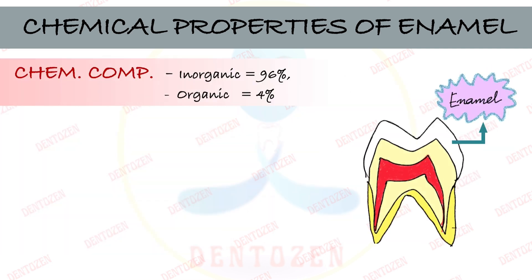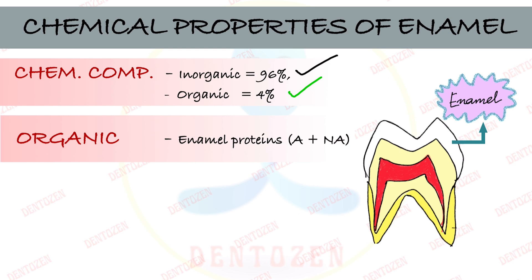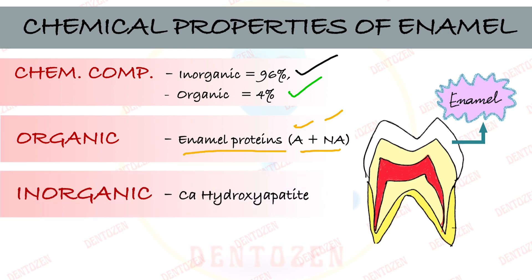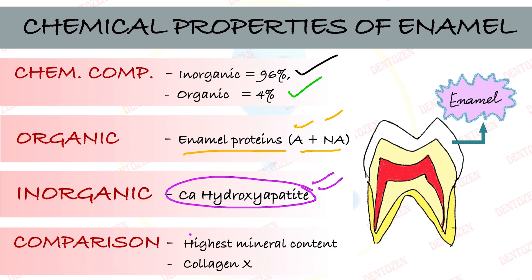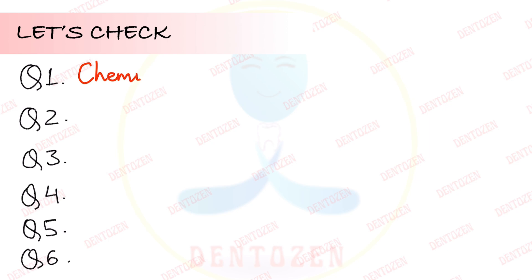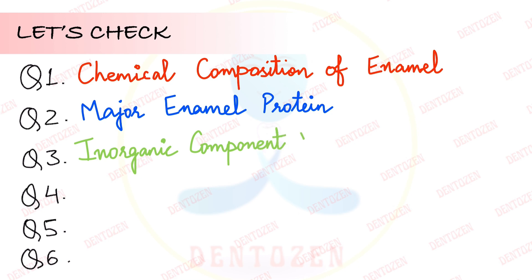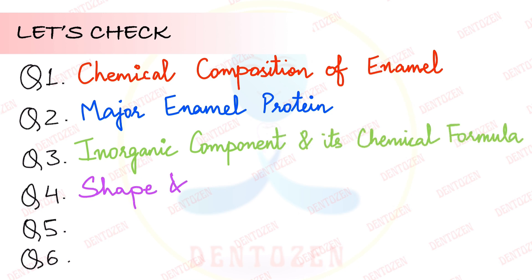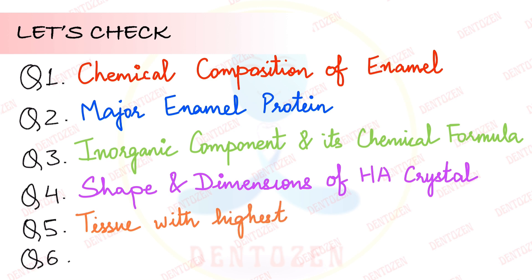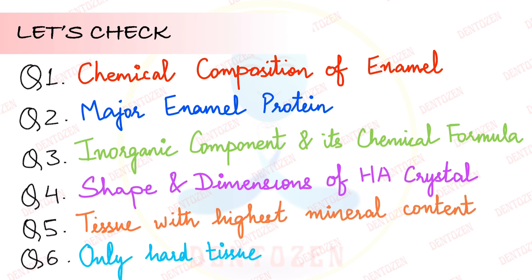Summary: Chemical composition of enamel by weight — inorganic is 96%, organic and water is 4%. Organic material is mainly enamel proteins: amelogenins and non-amelogenins. Inorganic component is calcium hydroxyapatite crystals. Enamel has the highest mineral content compared to other mineralized tissues, and it is the only hard tissue lacking collagen. Key review questions include the chemical formula, crystal shape and dimensions, and which mineralized tissue has the highest mineral content.